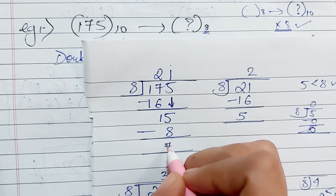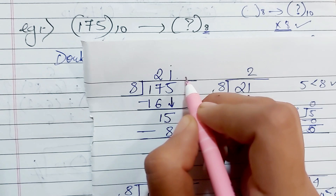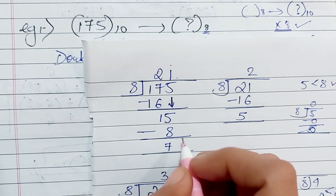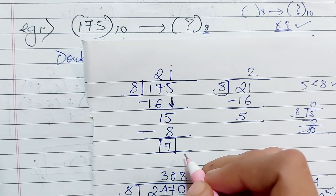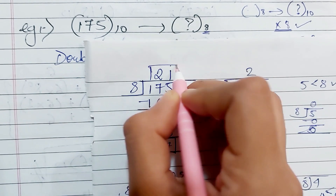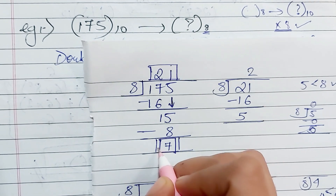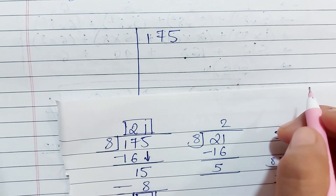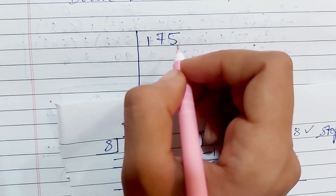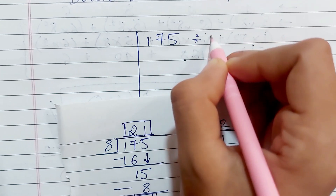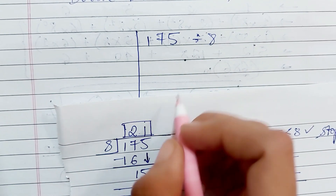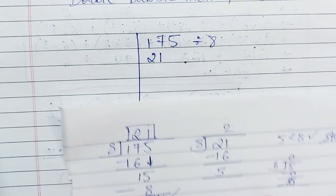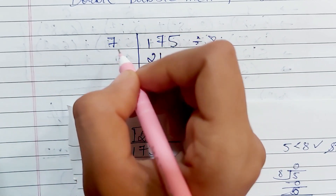We subtract and the answer is 7. So when we divide 175 by 8, the quotient is 21 and the remainder is 7. We write the quotient 21 below and the remainder 7 on the side. After that, we have to do the same step with this new digit, which is 21. We divide 21 by 8.